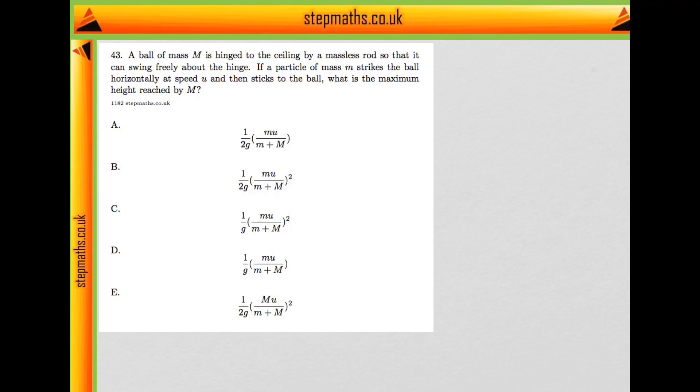So let's draw the scenario before the ball strikes. You have the rod and the mass m here hanging freely downwards. Then you have another mass m travelling horizontally at speed u and it's going to strike it. We're then told they join up, so they coalesce.